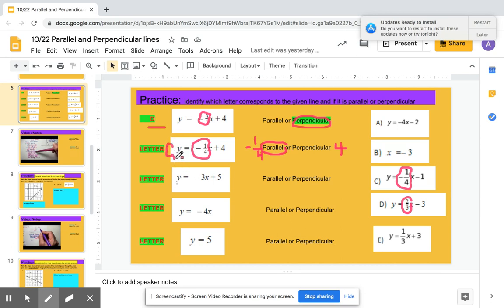You're going to do the exact same thing for the next three examples. And remember, if I have an equation as y equals 5, this is a horizontal line. It's a special case. So if it's a horizontal line and I'm looking for a line that's parallel,